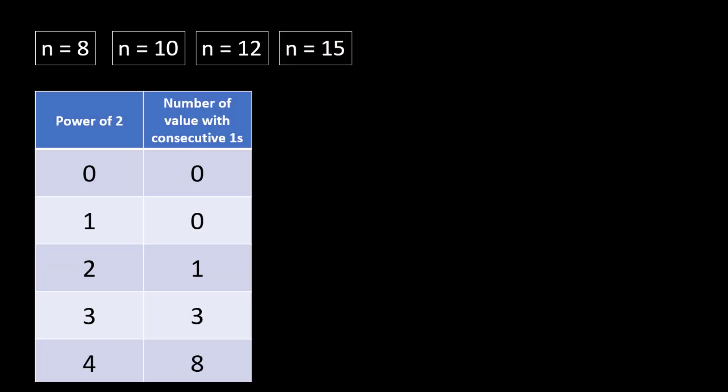Now let's focus on powers of 2. At 2^0 there are 0 values with consecutive ones, at 2^1 also 0, at 2^2 which is 4 there is 1, at 2^3 which is 8 there are 3, and at 2^4 which is 16 there are 8. Let's try to understand if there is a pattern in how many values with consecutive ones exist up to each power of 2.